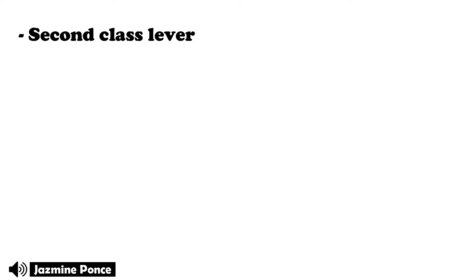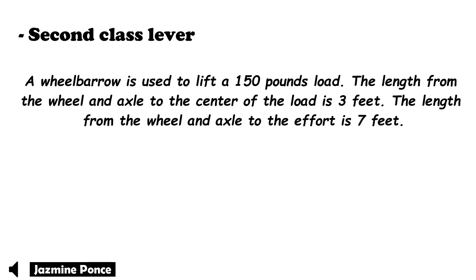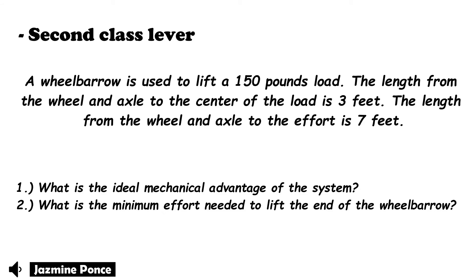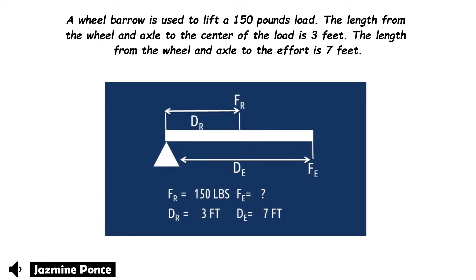Next is a second class lever problem. A wheelbarrow is used to lift a 150 lb load. The length from the wheel axle to the center of the load is 3 feet. The length from the wheel axle to the effort is 7 feet. The questions are: what is the ideal mechanical advantage of the system, and what is the minimum effort needed to lift the end of the wheelbarrow? We illustrate: FR = 150 lbs, DR = 3 feet, FE = unknown, DE = 7 feet.